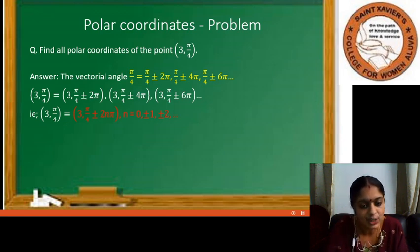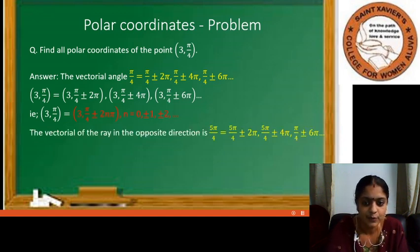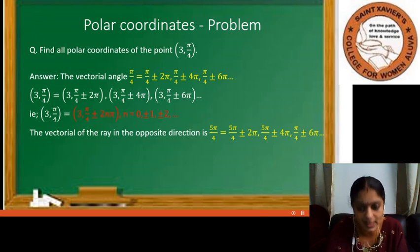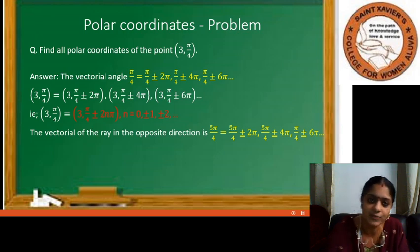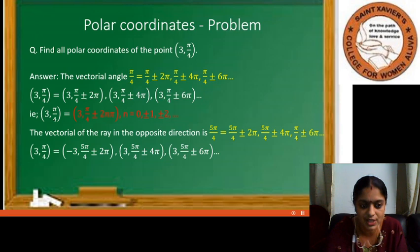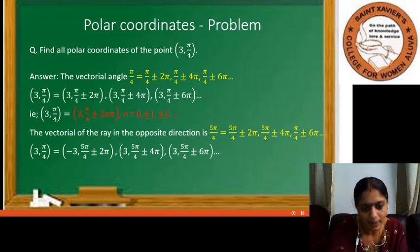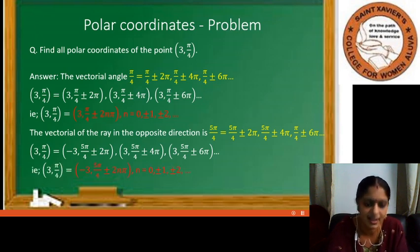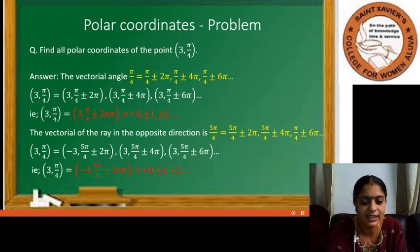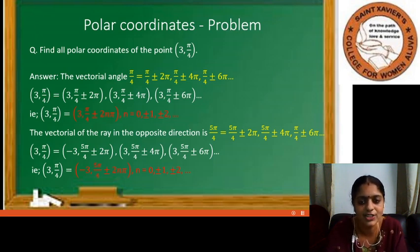Taking the vectorial angle in the opposite direction, 5pi/4 is the angle in the opposite direction, and the angles equivalent to 5pi/4 are 5pi/4 plus or minus 2pi, 5pi/4 plus or minus 4pi, 5pi/4 plus or minus 6pi, etc. Since it is in the opposite direction, the sign of R changes. So (3, pi/4) can also be represented as (-3, 5pi/4 + 2npi) where n equals 0, plus or minus 1, plus or minus 2, etc. That gives all possible polar coordinates of the point (3, pi/4).